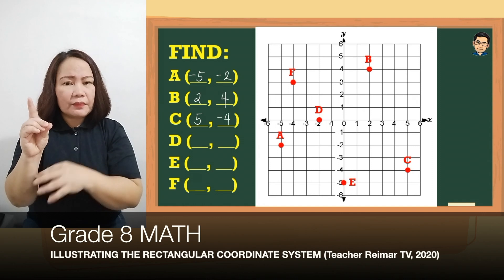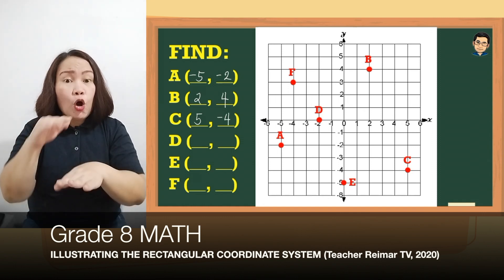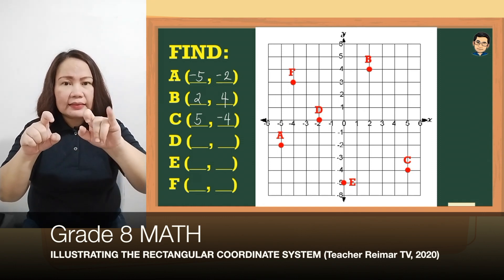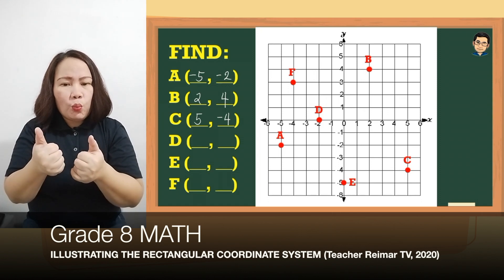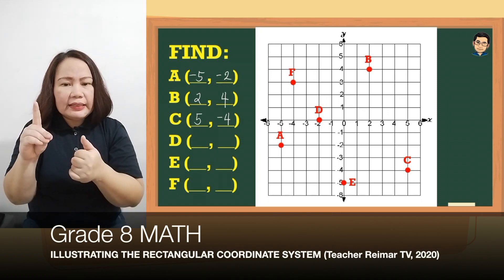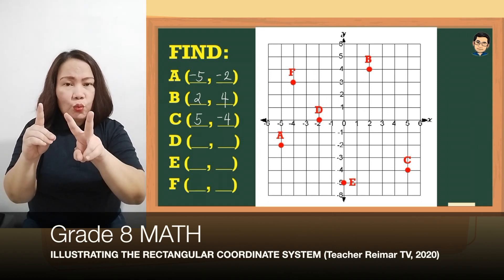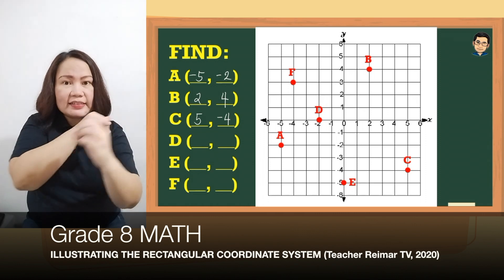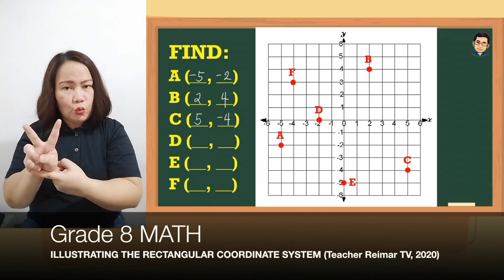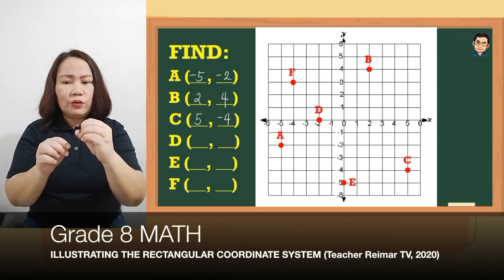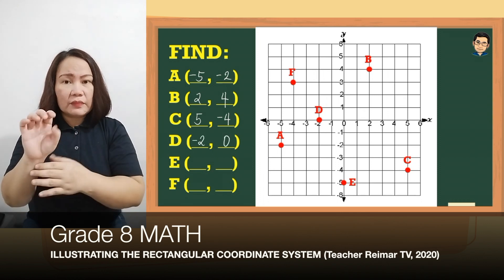Yung D naman po, kung mapapansin nyo, nasa x-axis. So nasa negative 2 yung x and then yung 0 naman yung sa y. So sulat natin siya as (-2, 0).